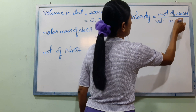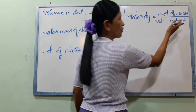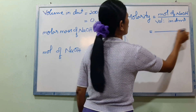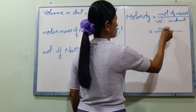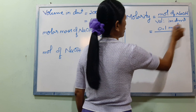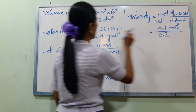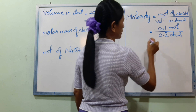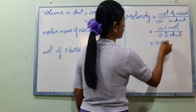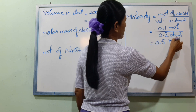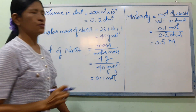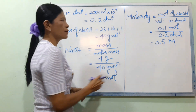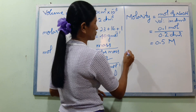Volume A. DM² of solution is equal to — moles of NaOH is 0.1. DM² is equal to 0.2 DM². D8, DM² is equal to 0.5 DM², 0.5 DM². This is equal to 0.6.